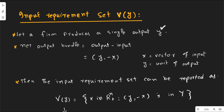So x is a vector of inputs that belongs to the n-dimensional positive real space, such that this much output y is produced with this much factor input x, and this production plan belongs to the production possibility set. This production plan — consisting of the output and associated inputs — is a single production plan within the production possibility set.